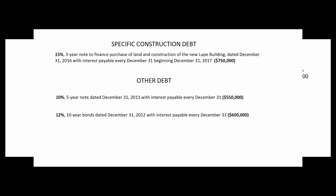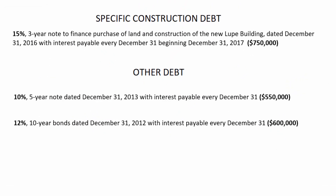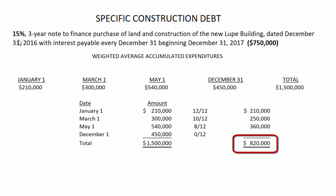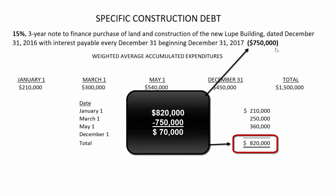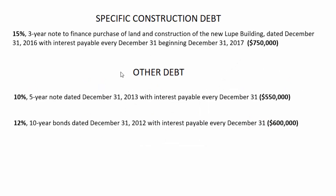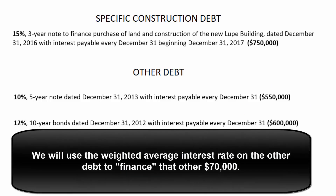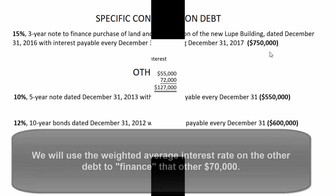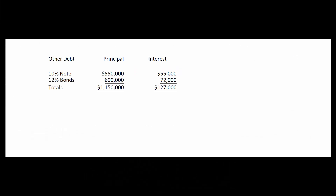If our weighted average accumulated expenditures had been exactly $750,000, we'd simply apply the 15% rate. But since the WAAE is $820,000, there's an extra $70,000 above the specific loan balance. We need to look at our other debt and determine what weighted average interest rate applies to it. We have some 10% debt and some 12% debt, so we'll calculate a weighted average interest rate and apply it to finance that additional $70,000.